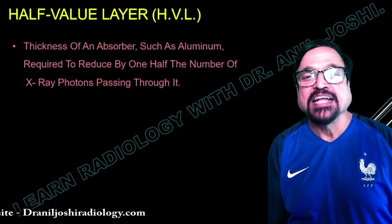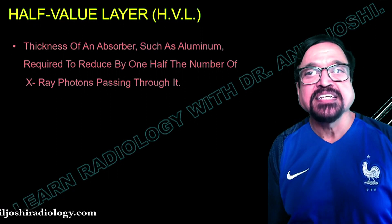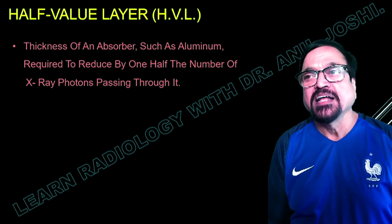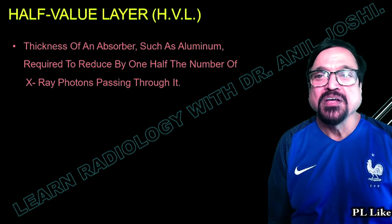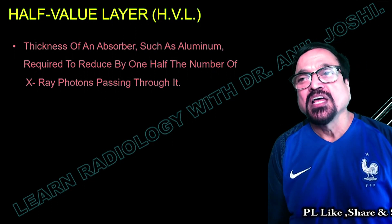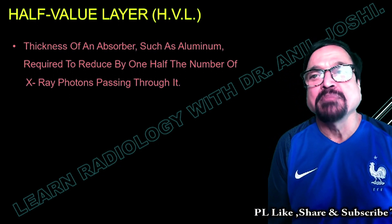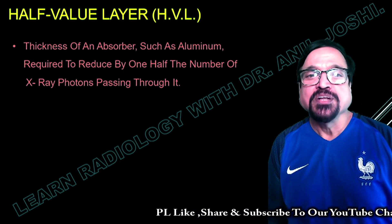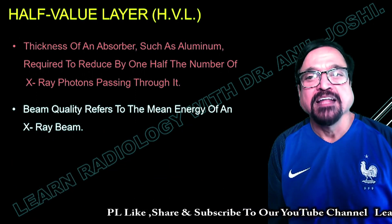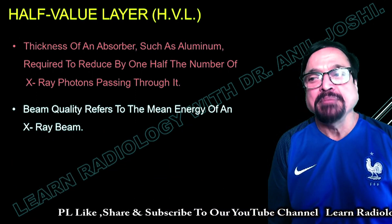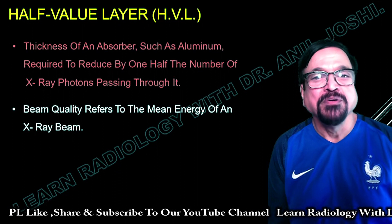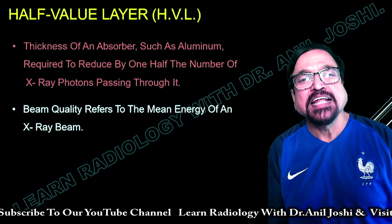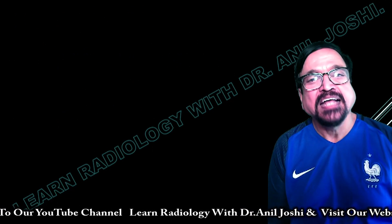What is the half value layer? It is often discussed in radiographic language. The half value layer is the thickness of an absorber — such as aluminum — required to reduce by one half the number of X-ray photons passing through it; in other words, it reduces radiation by 50%. Beam quality refers to the mean energy of an X-ray beam. Technically difficult to measure, but practically the half value layer represents a 50% reduction in X-ray efficiency.